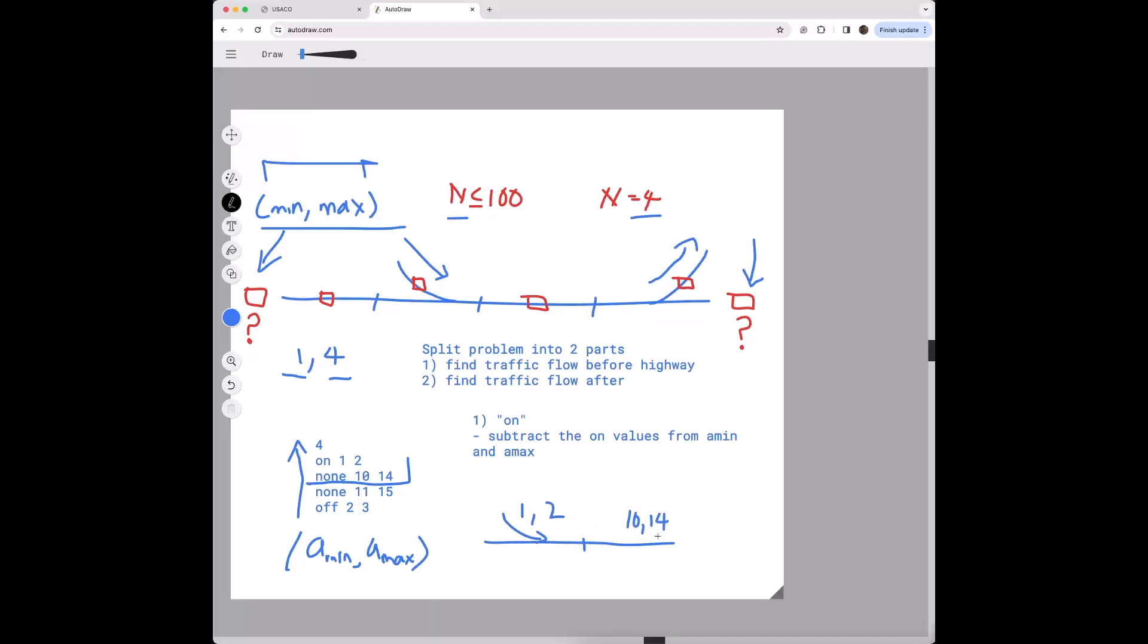And what this means is that when we subtract, we want to get the minimum amount of the most minimal amount of traffic flow prior to the highway and the maximal amount of traffic flow prior to the highway given these values. So when it was one and one we just subtracted one from both of these.